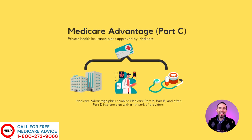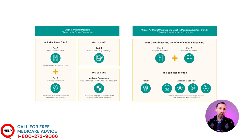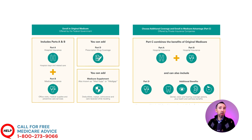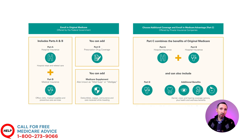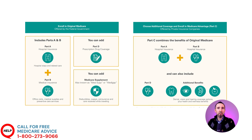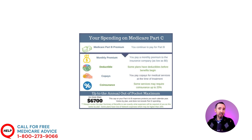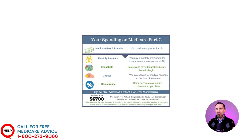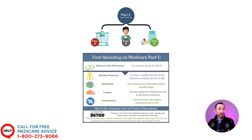Moving on to Medicare Part C, commonly known as Medicare Advantage. Part C is a replacement for Original Medicare, a government-subsidized alternative offered by private insurance companies. It replaces Part A and Part B and usually includes prescription drug coverage — if not, you can add it separately. Many people choose this because these plans limit out-of-pocket costs and offer additional benefits like dental, vision, hearing, hearing aids, gym memberships, and transportation. Some plans have a $0 monthly premium, making them a very popular option. Around 40% of Medicare beneficiaries choose an Advantage plan.